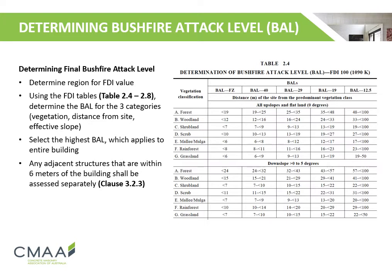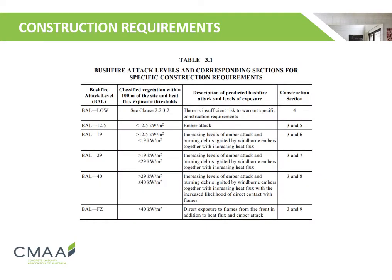Any adjacent structures that are within 6 metres of the building shall be assessed separately. Once we have calculated the bushfire attack level, we determine the corresponding construction requirement. Components such as subfloor supports, floors, walls, external glazing elements, doors and roofs shall be designed accordingly.